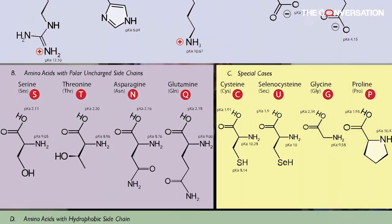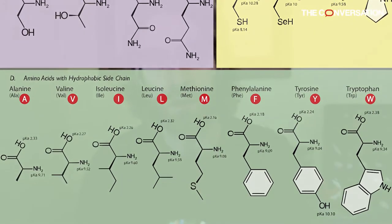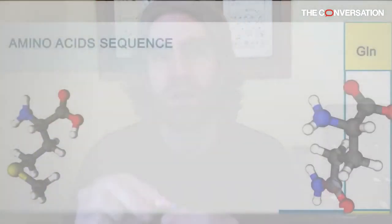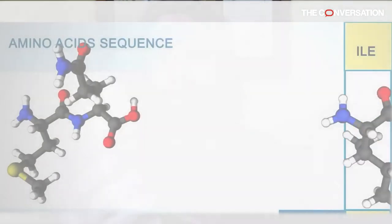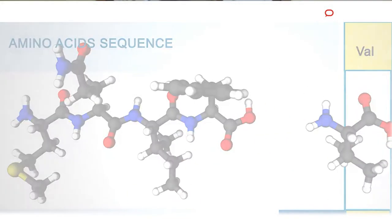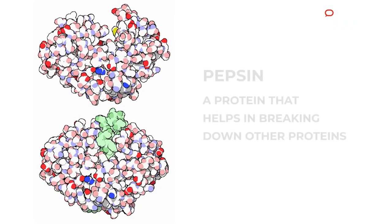Amino acids in our body come from the food that we eat, and we also make them. Other animals make proteins, so we eat those, take them in, and we break that chain down into the individual amino acids. Then we can rebuild it in any combination that we want. It turns out we can make about half of our amino acids on our own, but the other half we have to get from our food.